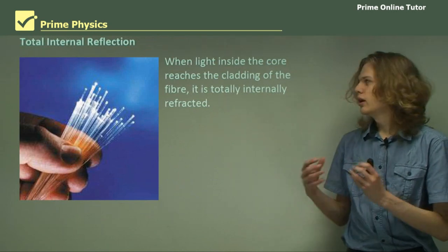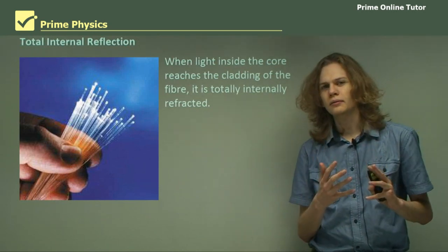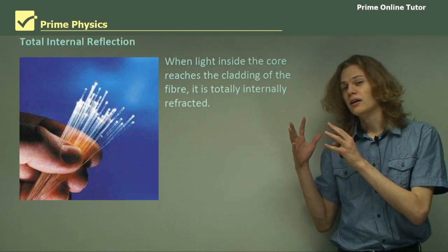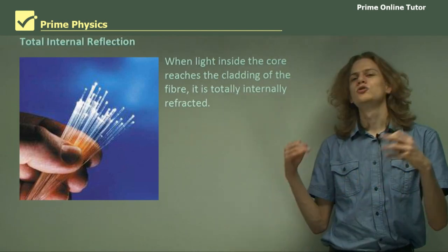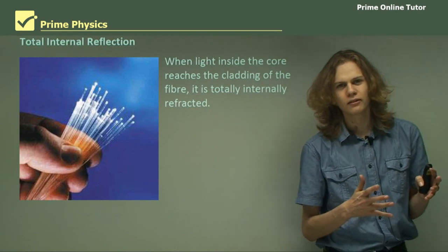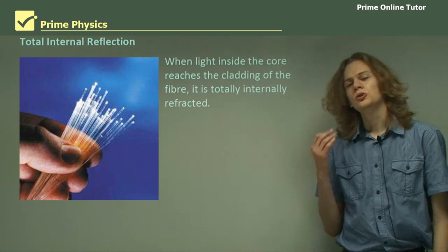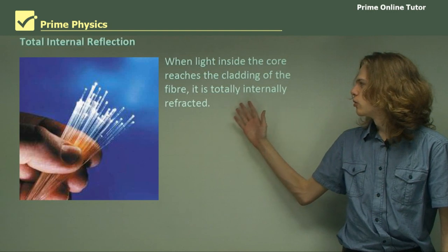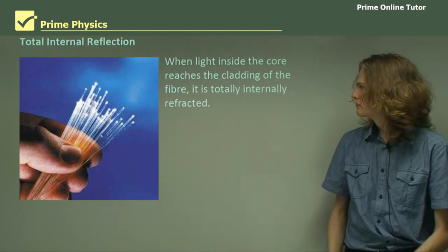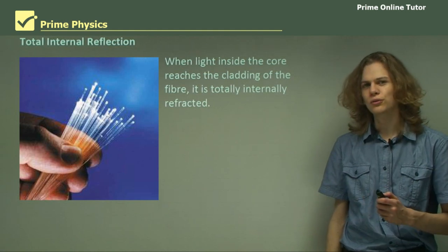Now when light inside the core gets to the cladding, we'll be going from a high refractive index into a low refractive index. And that means that if we do it at the right angle we will get total internal reflection — so it will become totally internally reflected.